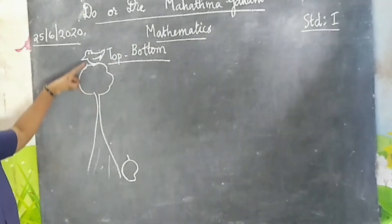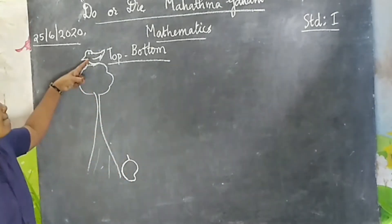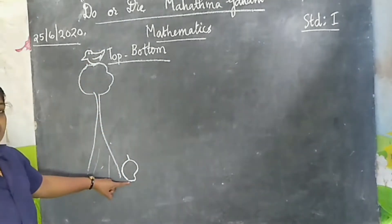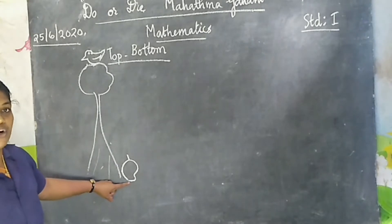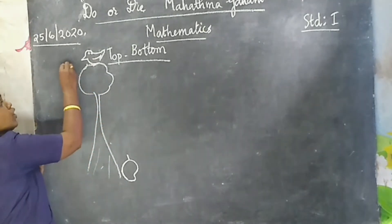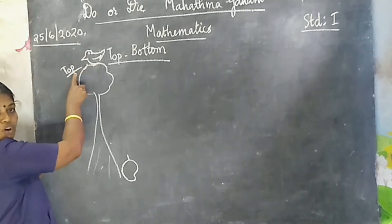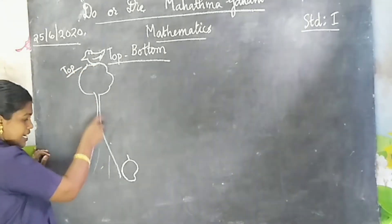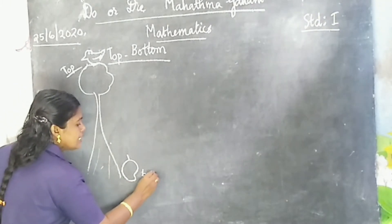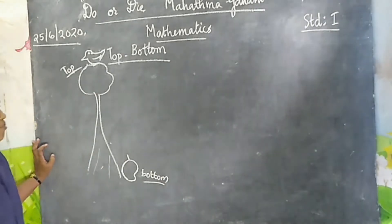A tree, a bird, and a mango. Bird is at the top of this tree and mango is on the bottom of the tree. This bird is on the top. Top means mughalil.